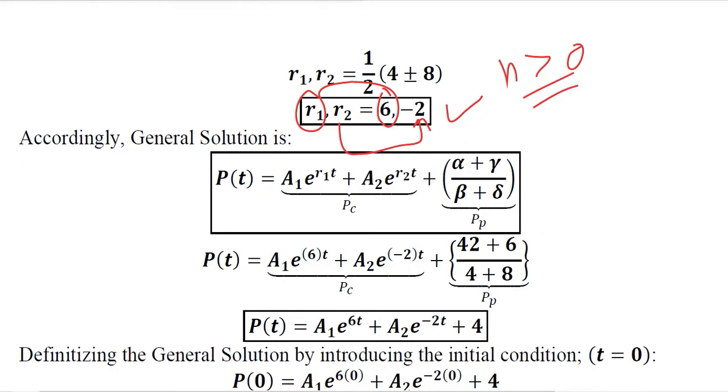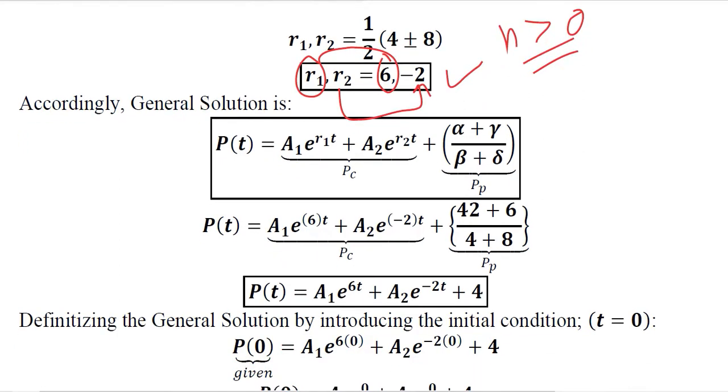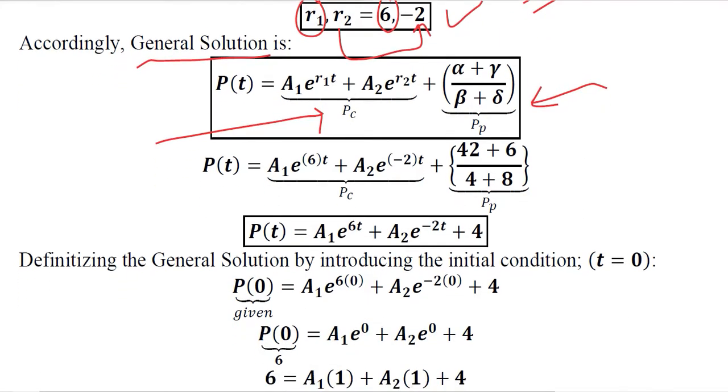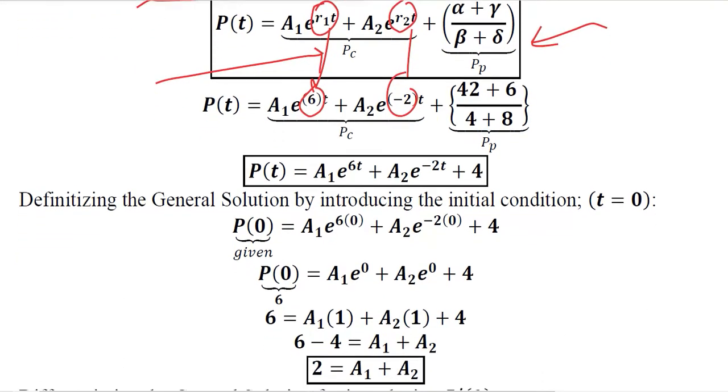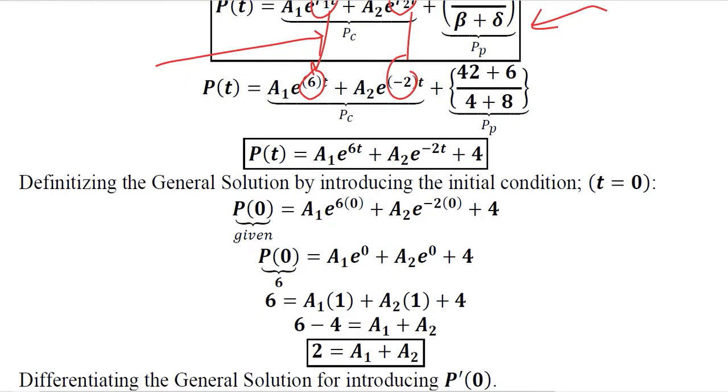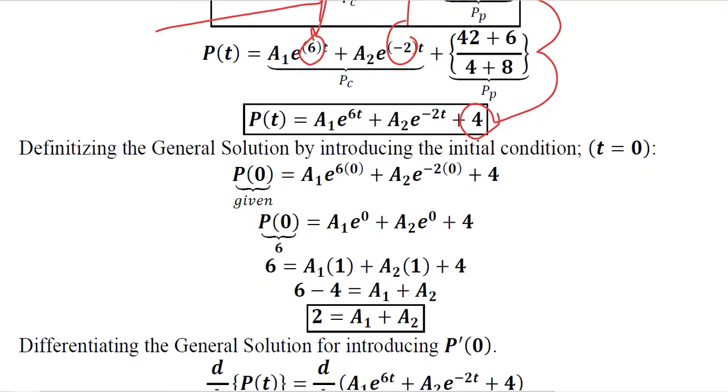We are putting these values in the general formula, the general solution. This is the complementary part, this is the particular integral. So R1 is substituted, R2 is substituted, and then we find the solution. This is the solution. We can easily solve this. This is the particular integral, the equilibrium value which is the static equilibrium.